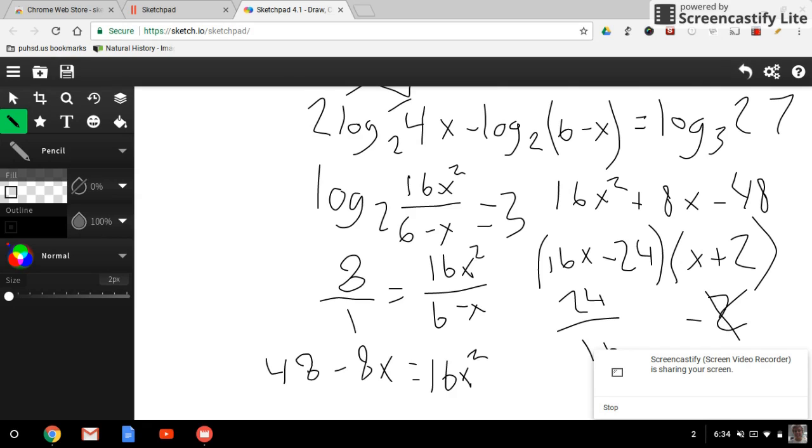The first step to solving 2 log base 2 of 4x minus log base 2 of 6 minus x equals log base 3 of 27 is distributing this 2 on the log base 2 of 4x. What you can do is bring it back and let it square the 4x, which then becomes 16x squared. After you do that, recognize that it's subtraction, and since it's subtraction, you can use division to make it simpler. You can then divide 16x squared by 6 minus x.